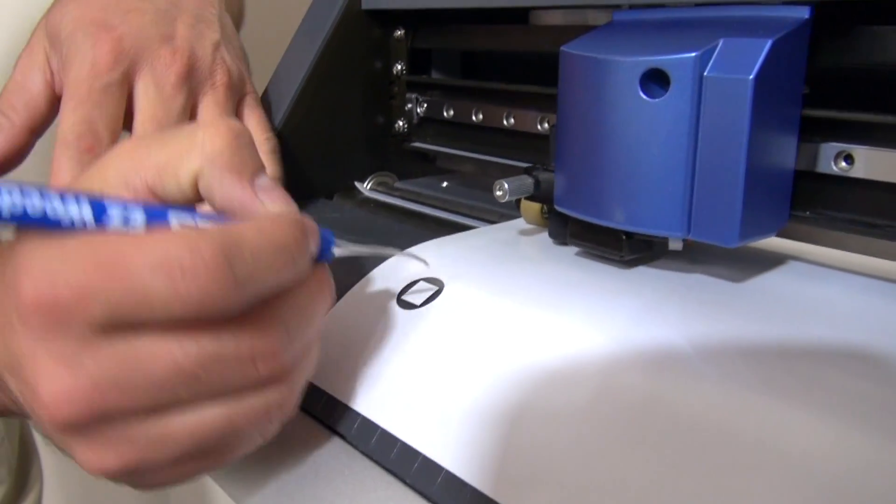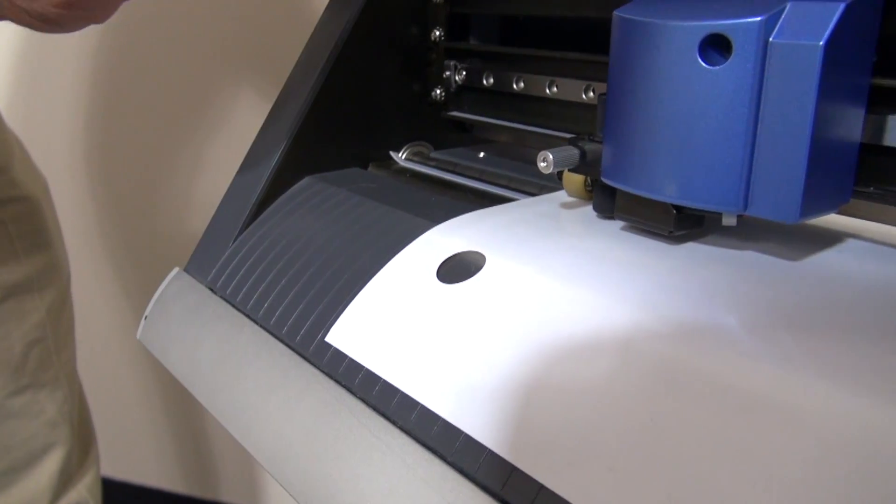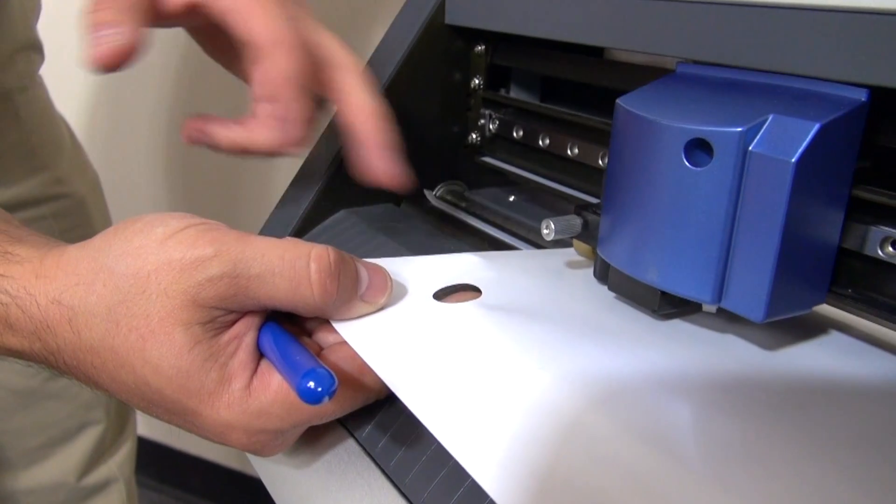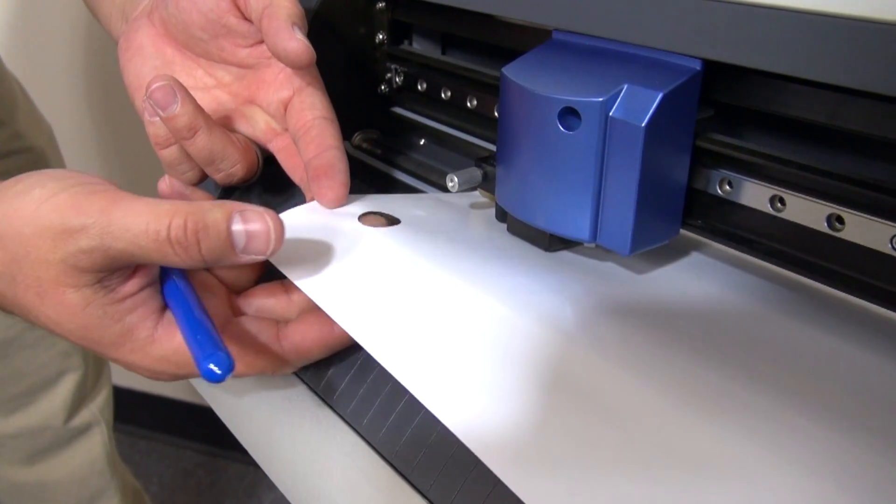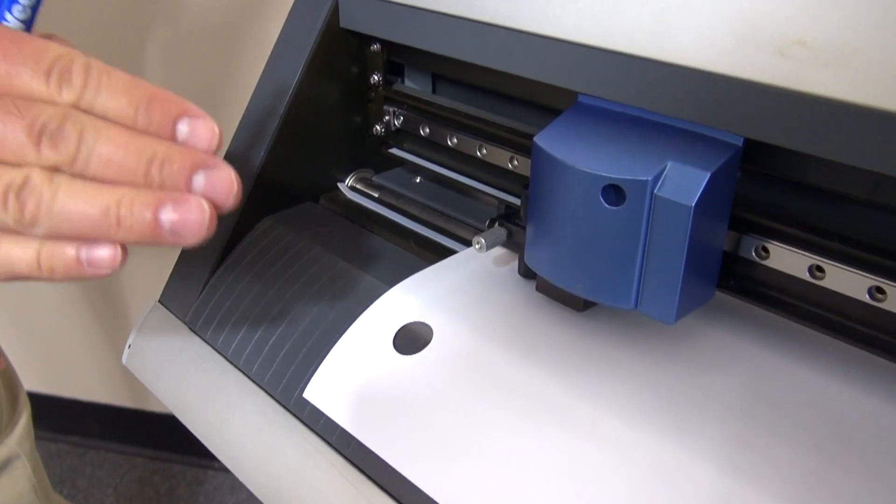One other thing you want to check is peel up the square to be sure we're not using an excessive amount of force, because if you're using too much force you're essentially cutting through that and damaging the cutting strip. Just take your finger, rub on the back. If you don't feel any deep grooves or indentations, your cutter is set perfectly.